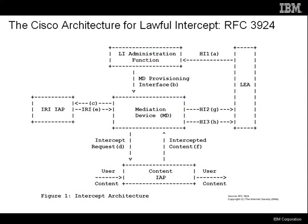An IRI IAP is designed for situations where they don't have a warrant — maybe they have an administrative subpoena — and they're looking to access routing information: to addresses, from addresses, SMTP headers, stuff that is equivalent to the outside of the envelope. A content IAP is a device that can collect the contents of the envelope — all of the communications information.